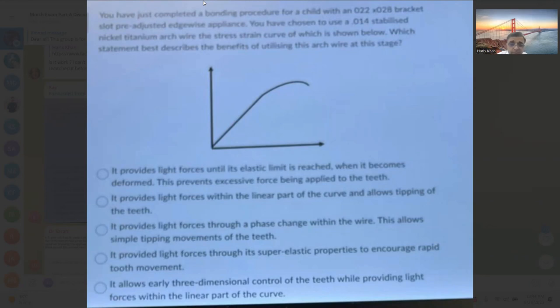It provides light force within the linear part of the curve and allows for tipping of the teeth. It provides light forces through phase change within the wire—there is no phase change. It provides light forces through super-elastic properties—no. It allows three-dimensional control of the tooth. Okay, the last three options are wrong. So we are left with two options. It provides light force until elastic limit is reached when it becomes deformed, or within the linear part of the curve and allows tipping of the teeth.